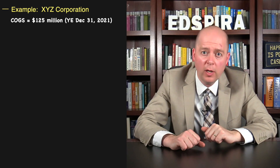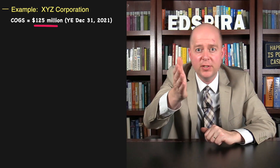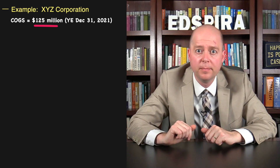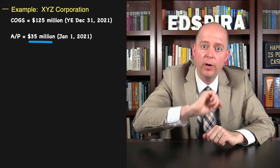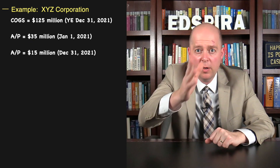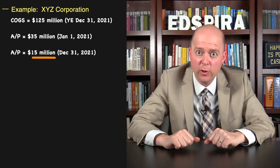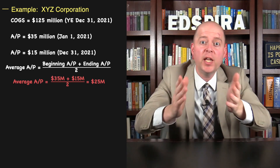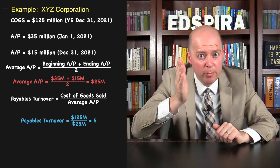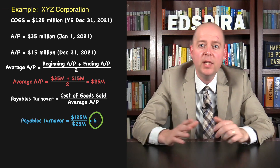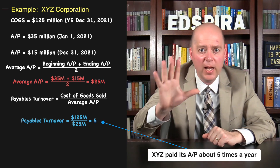XYZ Corporation reported Cost of Goods Sold of $125 million for the year-ended December 31st, 2021. The company's accounts payable balance was $35 million as of January 1st, 2021, but just $15 million as of December 31st, 2021. The average accounts payable for 2021 was thus $25 million, and the payables turnover was five, meaning the company paid its accounts payable balance about five times a year.